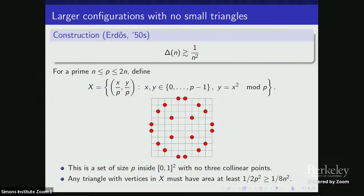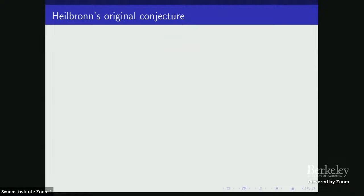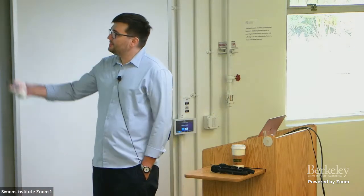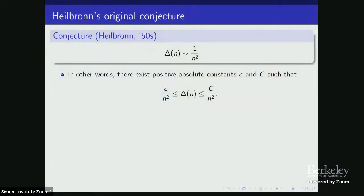Because the dilate of this picture by P is a configuration of points with integer coordinates, and the area of a triangle with integer coordinates is at least one half. So the area of any triangle is at least one over two times P squared — at least a constant times one over N squared given the choice of P. This is a nice construction and it's not the only one. One can also construct configurations with all triangles of area at least a constant times one over N squared probabilistically, or using a greedy argument. This motivated Heilbronn to conjecture that one over N squared is the correct order of magnitude.